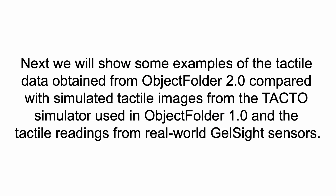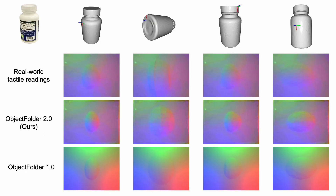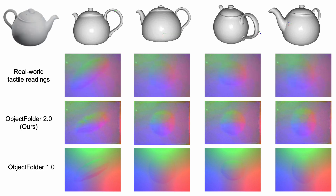Next, we show examples of the tactile data from Object Folder 2.0 compared with simulated tactile images from the TACTO simulator used in Object Folder 1.0, as well as tactile readings from real-world GelSight sensors. Compared to the ground truth simulated tactile images from TACTO, our implicit neural representation networks more accurately encode the multisensory data and match real-world tactile readings much better. Here are additional examples from the teapot object.